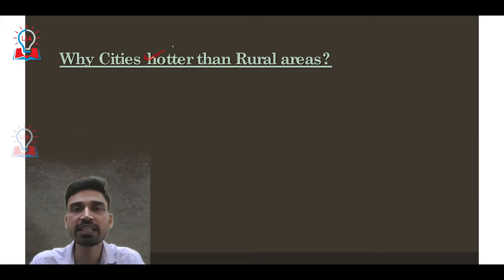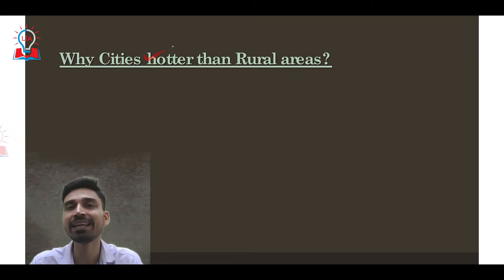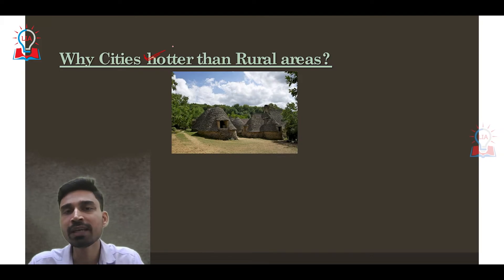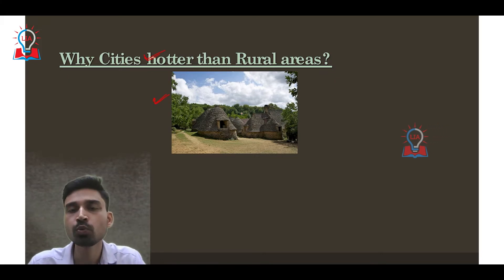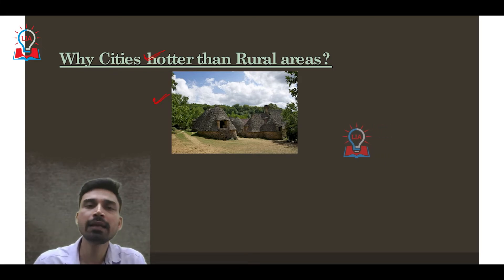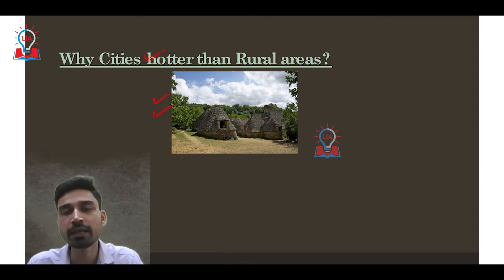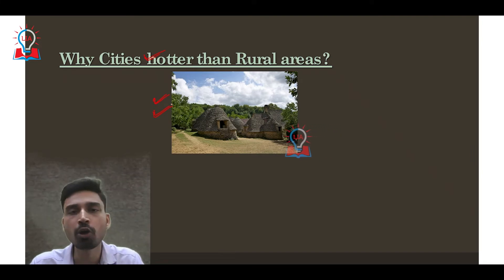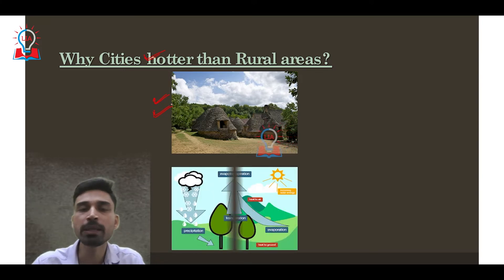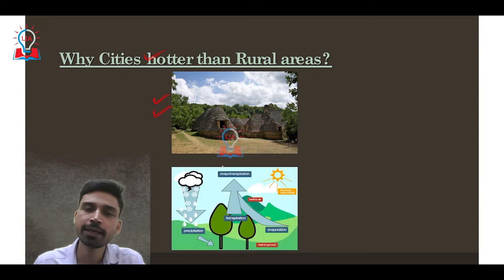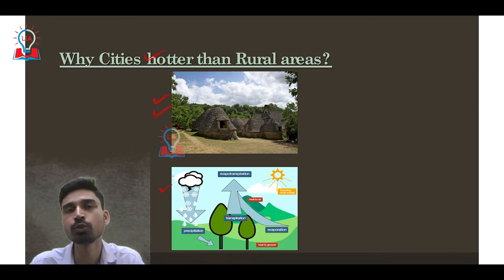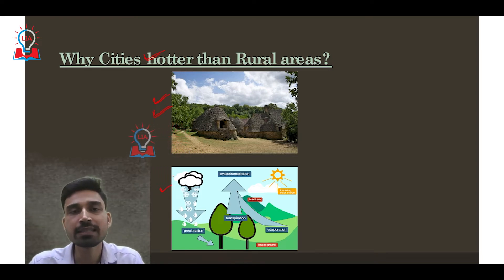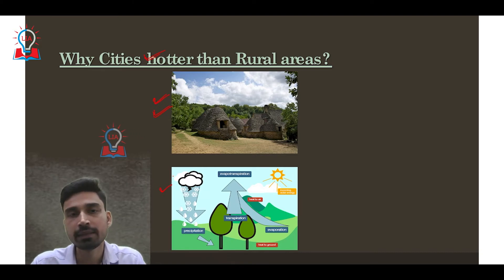Why do certain pockets of cities become much hotter compared to adjoining green or rural areas? In rural areas, greenery is much higher — villages are covered by trees, forests, and farmlands. The availability of large extents of greenery plays a very important role in thermoregulation. One of the most important ways temperature regulation is achieved in rural areas is through the process of transpiration.